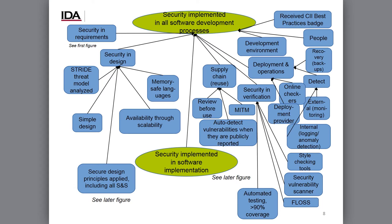For supply chain, we review the code before we use it — this can be as simple as checking who it's from and whether lots of other people are using it, and we drill into actual code reviewing in cases where we have concerns. We automatically detect vulnerabilities whenever they're publicly reported. We use various countermeasures against man-in-the-middle attacks. For verification, we have a policy that our automated tests must cover at least 90% of statements — and right now we're at 100% according to our tool. We release our code as free/libre open source software so anybody can review it. We use a software vulnerability scanner called Brakeman, which is designed to look at Ruby on Rails applications for security vulnerabilities. We also use style checking tools including RuboCop for Ruby, ESLint for JavaScript, and Rails Best Practices.